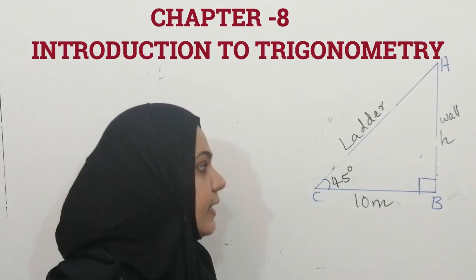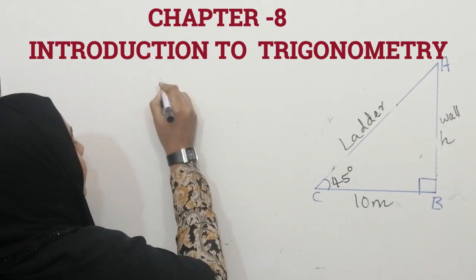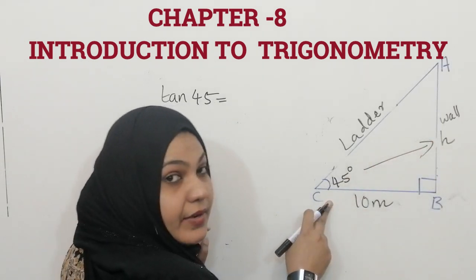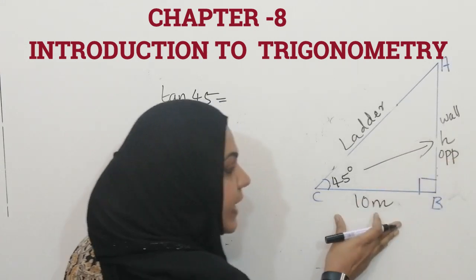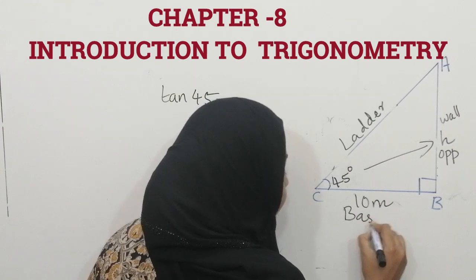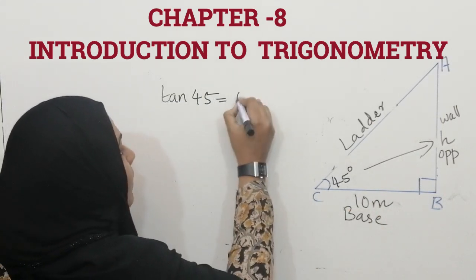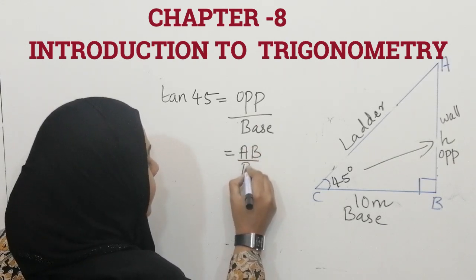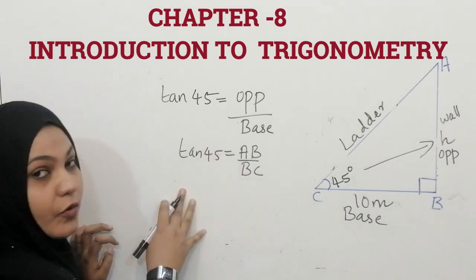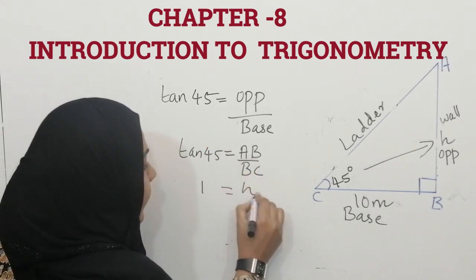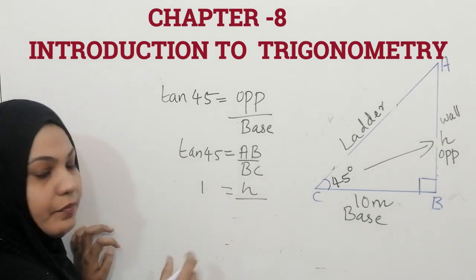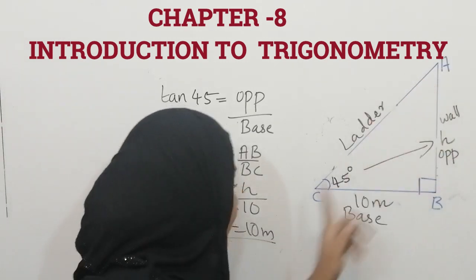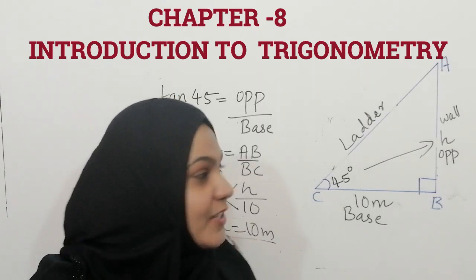Let us see how we can solve this. From this triangle we can write tan 45 equals opposite over base. The side opposite to the reference angle is AB — that is opposite — and the base is BC. Tan 45 equals 1, so H over BC equals 1. BC is 10 meters, so H equals 10 meters. The height of the wall is 10 meters. From this you can understand trigonometry is really easy to solve such types of questions.